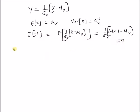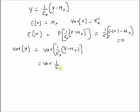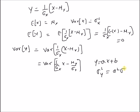Next, the variance of y equals the variance of (1/σx) × (x − μx). This can be seen as a linear model of the form ax + b, where a = 1/σx. We already know that for such a linear model, the variance is a² times the variance of x, which is σ²x. So we have (1/σ²x) multiplied by σ²x, which equals 1.